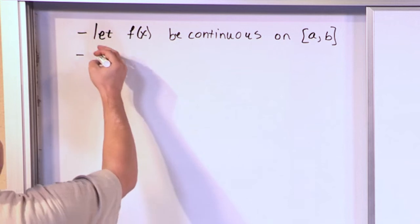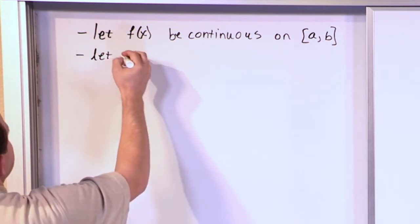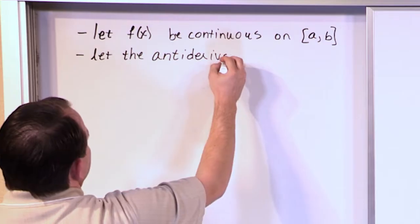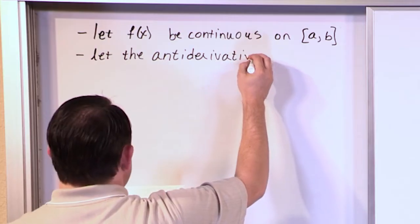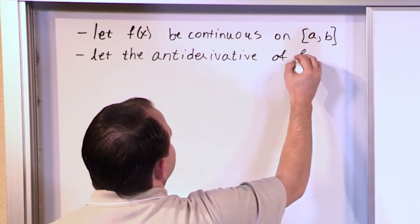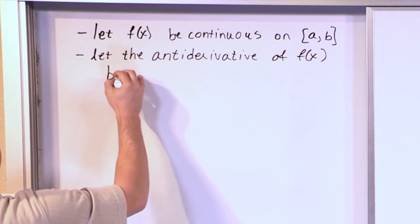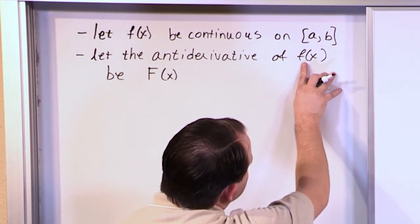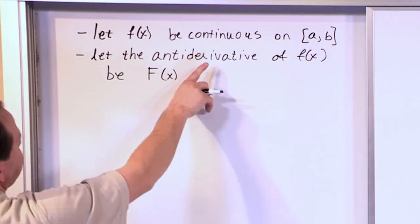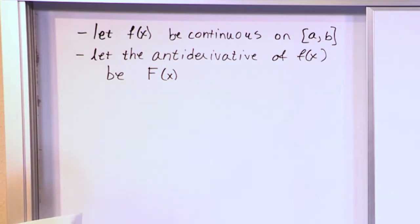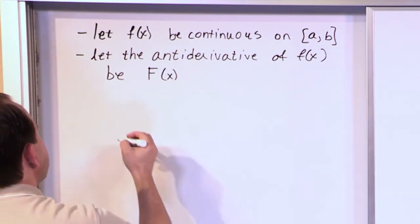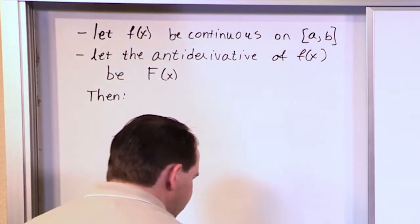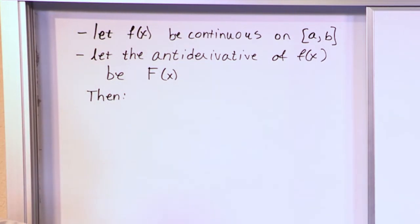The second thing is we're going to let something called the anti-derivative of f(x) be denoted as capital F(x). Notice the function we're integrating is lowercase f(x). The anti-derivative is denoted by a capital F. If you don't have a continuous function, then you can't do any of this stuff.